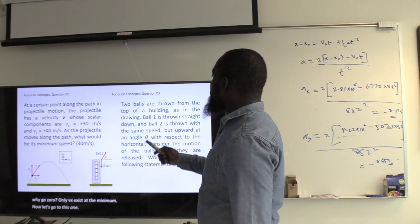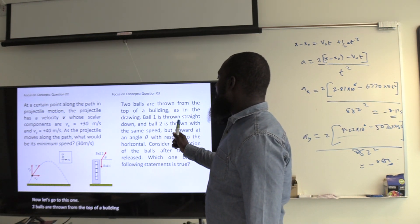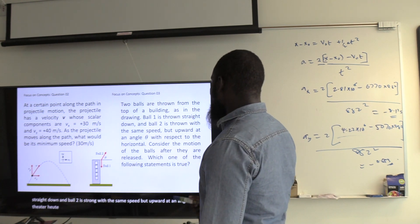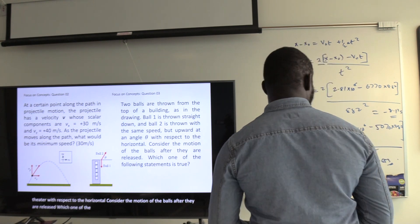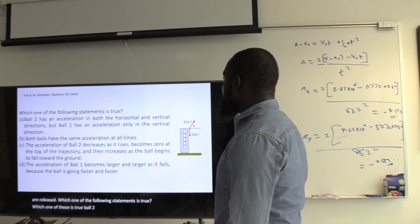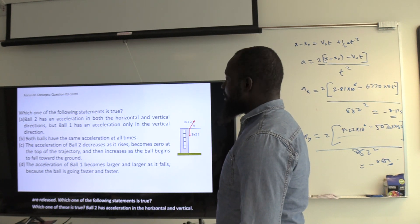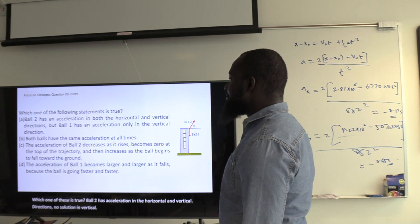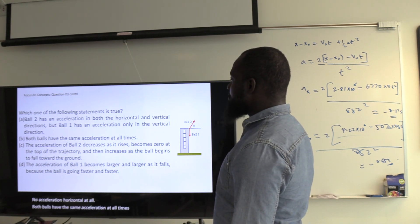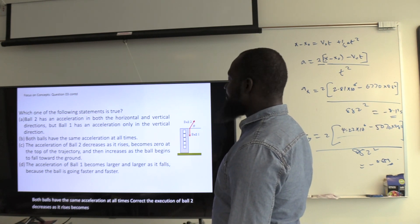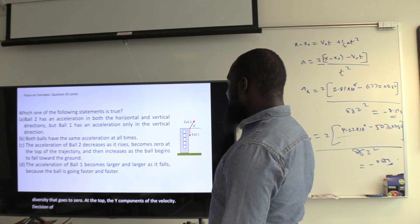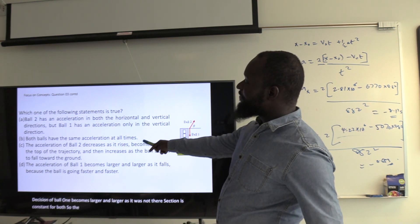Two balls are thrown from the top of a building. Ball 1 is thrown straight down; ball 2 is thrown upward at angle theta with the same speed. Which statement is true? Ball 2 has acceleration in both horizontal and vertical directions — no, no horizontal acceleration. Both balls have the same acceleration at all times — correct, both experience only g downward. Acceleration of ball 2 becomes 0 at the top — no, acceleration is never zero; only the y-velocity is zero there. So the answer is B.